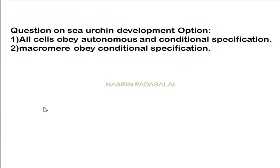A question on sea urchin development: large micromeres follow autonomous specification, and all cells of the sea urchin have the capacity to follow both autonomous specification and conditional specification. Autonomously specified cells secrete paracrine and juxtacrine factors that provide conditional specification, allowing cells to change their fate based on environment.